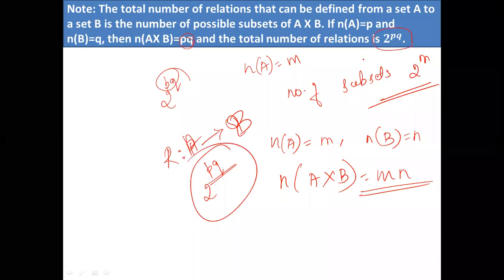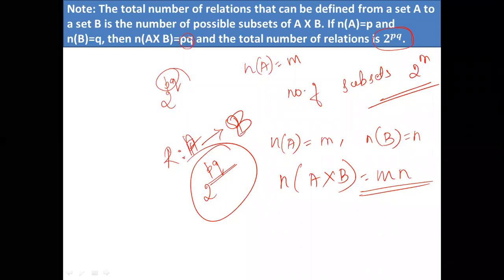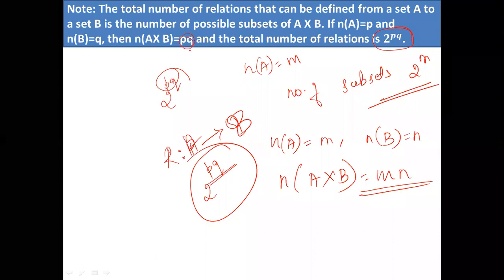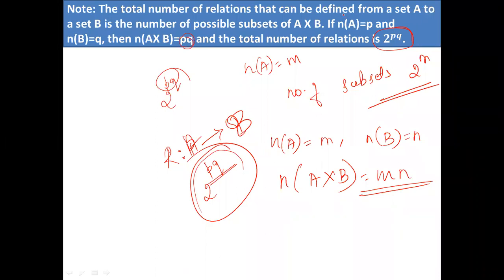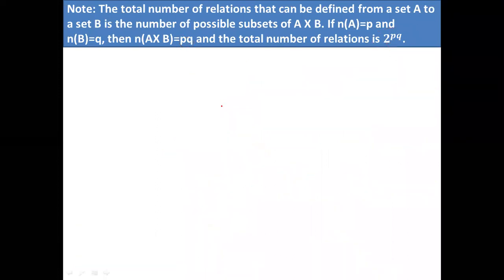You have to remember this point. If R is a relation from A to B, the number of elements in A is p, the number of elements in B is q, then the number of elements in A cross B is pq, and therefore the total number of relations is 2 to the power pq. You can take a screenshot of this point.